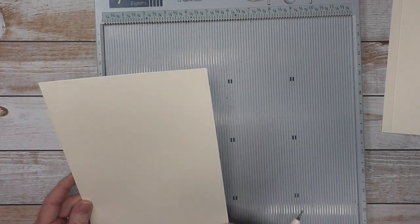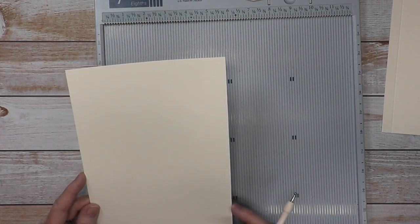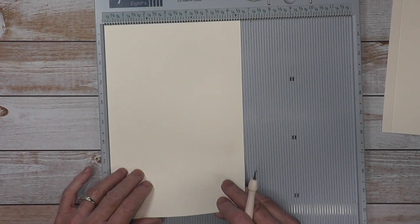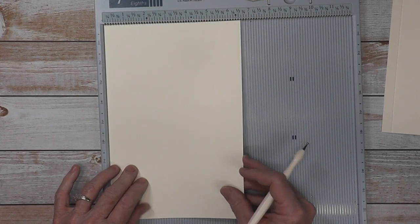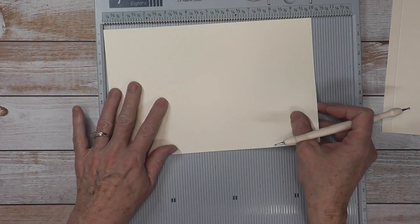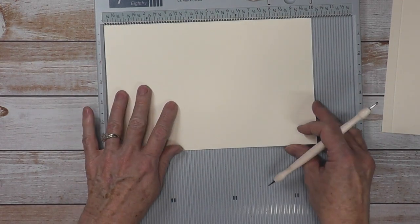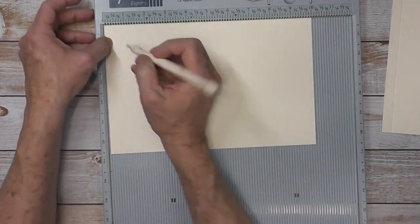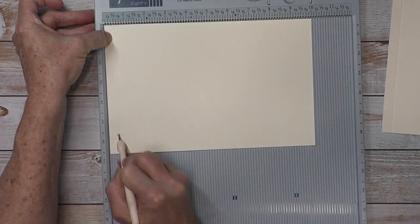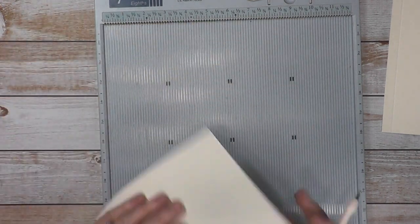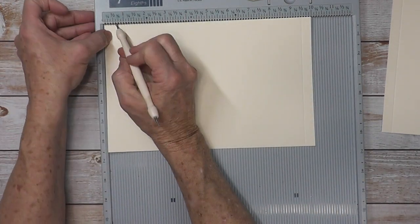Then you also need to cut, for your page pocket sleeves, you need three that are 6 and a half by 10, and you put the 10 inch at the top. You're going to score it a half inch, turn it, score it a half inch.